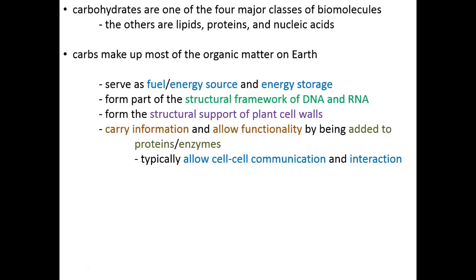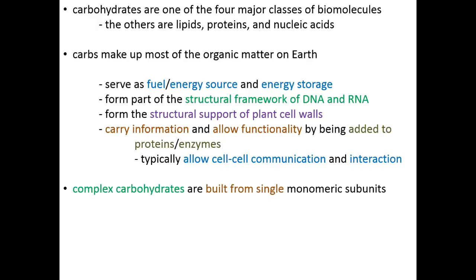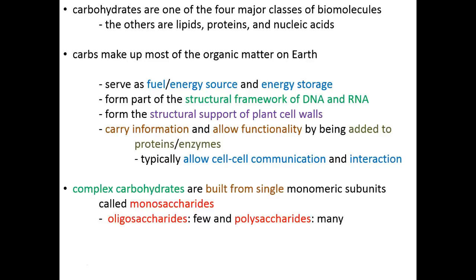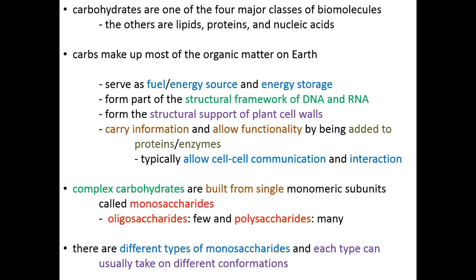Cells interact with other cells largely through recognizing the sugars they display. To do all of these things, we need a diversity of these molecules — different shapes and sizes to do different jobs — and that brings us to the idea of complex carbohydrates. Complex carbohydrates are chains of individual sugar monomers brought together to make larger structures. Individual sugar monomers are called monosaccharides — saccharide meaning sugar, mono meaning one. Linking a small number of sugars together creates an oligosaccharide. If we continue adding many sugar monomers into a very large structure, we have made a polysaccharide, or complex carbohydrate.